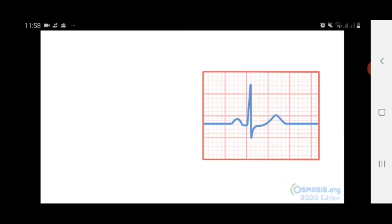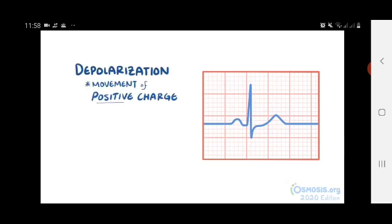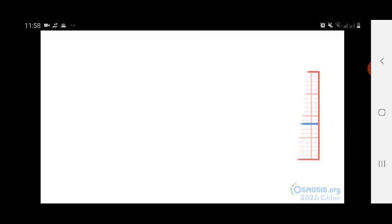The general principle to keep in mind is that the depolarization is caused by the movement of positive charge. So if that movement of positive charge is going toward the positive electrode, then it's captured as a positive deflection on an ECG. With that in mind, let's take a closer look at the mean, or average, QRS vector.